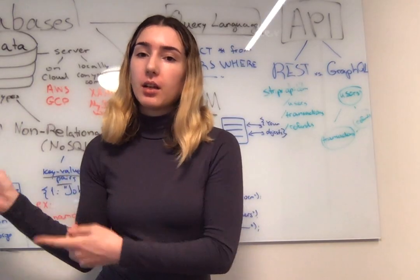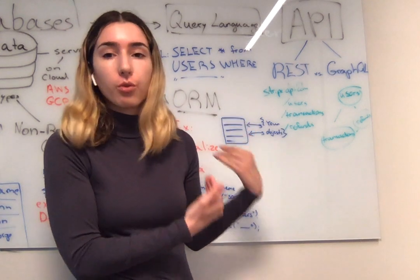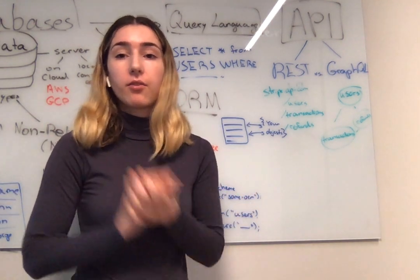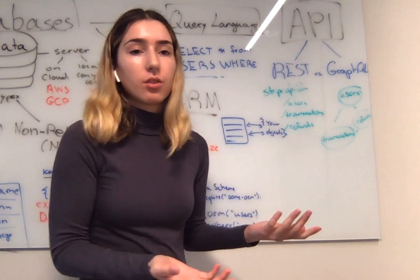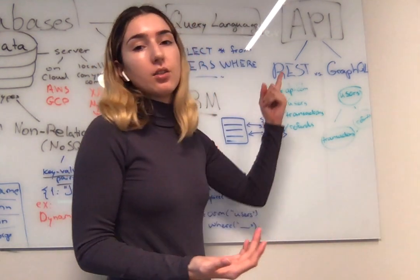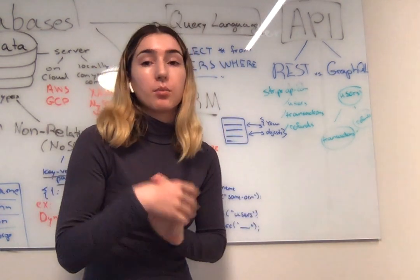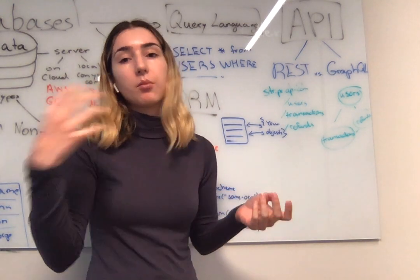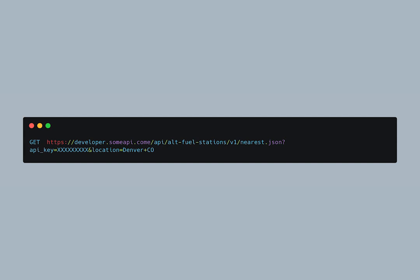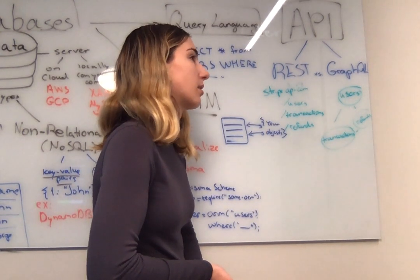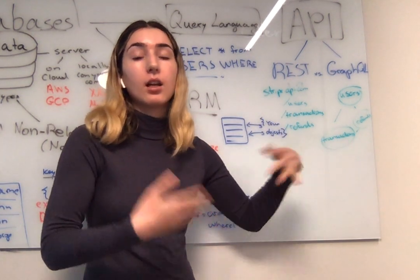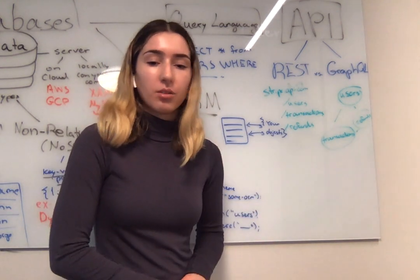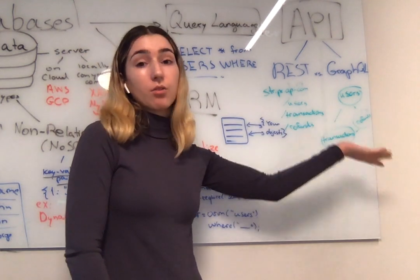Now that you have your databases and decided how you want to query your data, the next step is to think about how you would pass that query data from the database to the client. The way to do that is using APIs. When you're building a template or a component and you need to get data from the backend, you need to call the API. There are two main ways you can approach creating and using APIs, and this is a big discussion today in programming: REST APIs or GraphQL APIs.